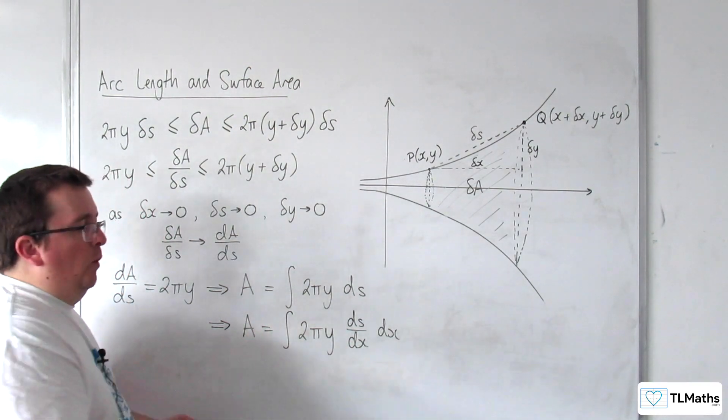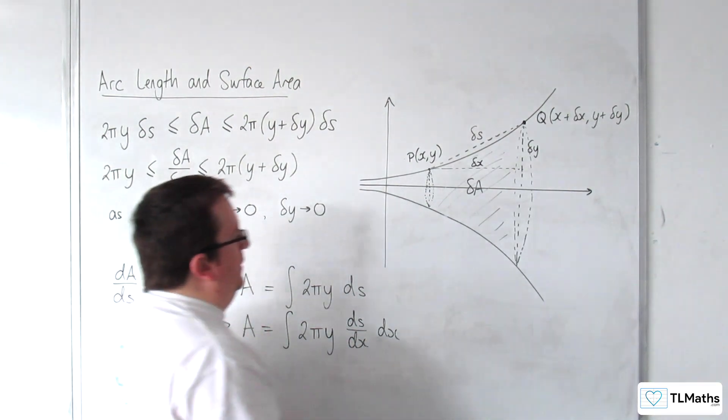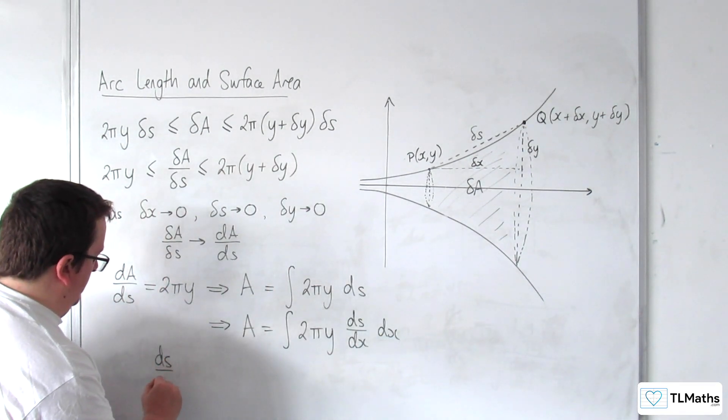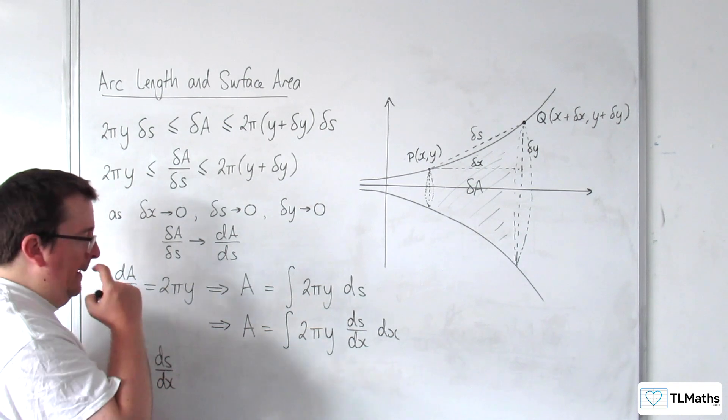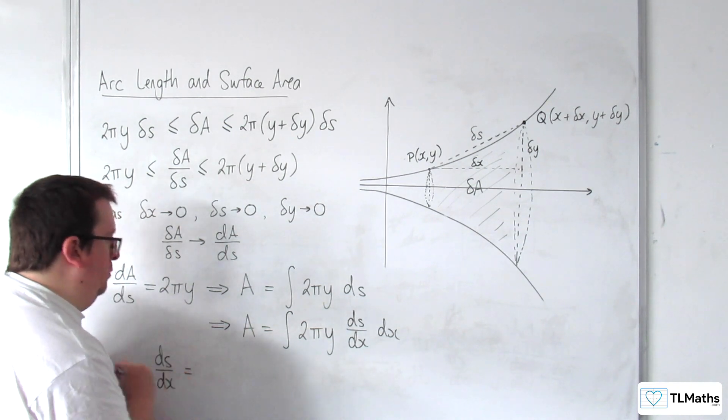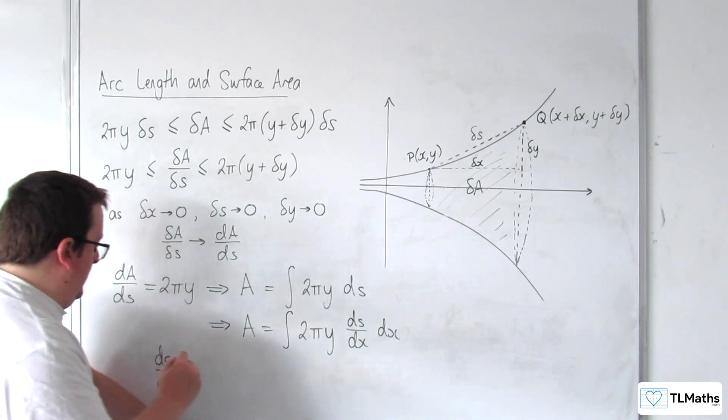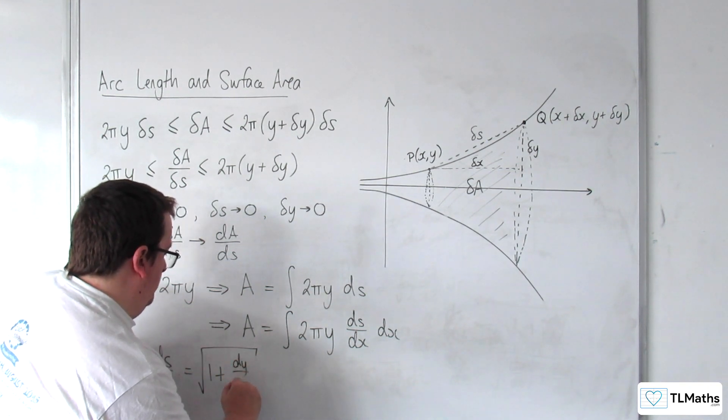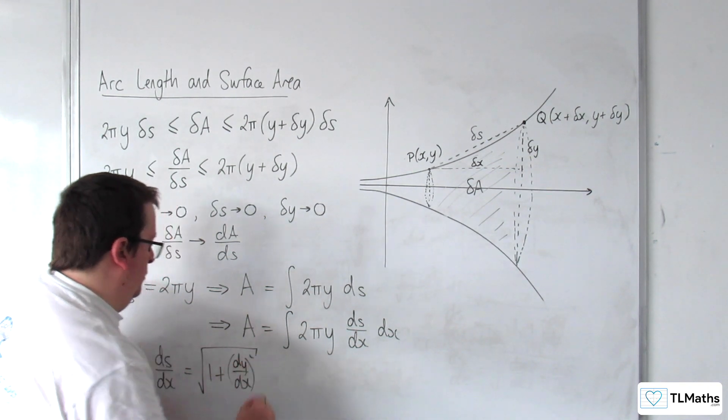Now the dS/dx is what we met previously with the arc length. Now if you remember, dS/dx would be equal to the square root of 1 plus (dy/dx)².